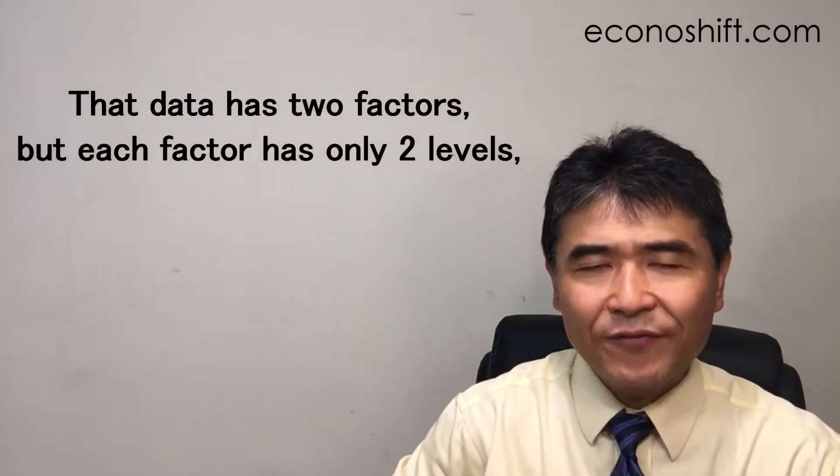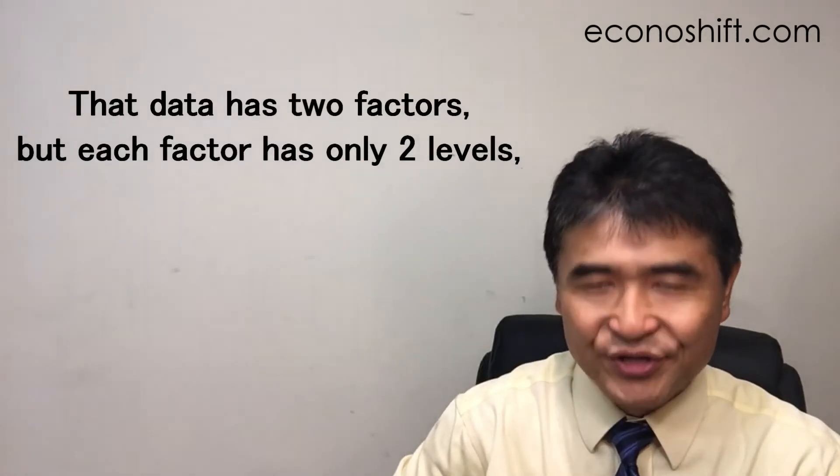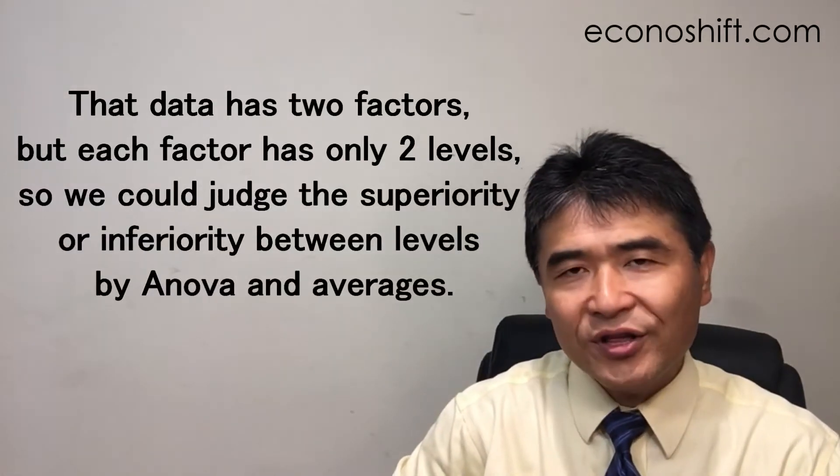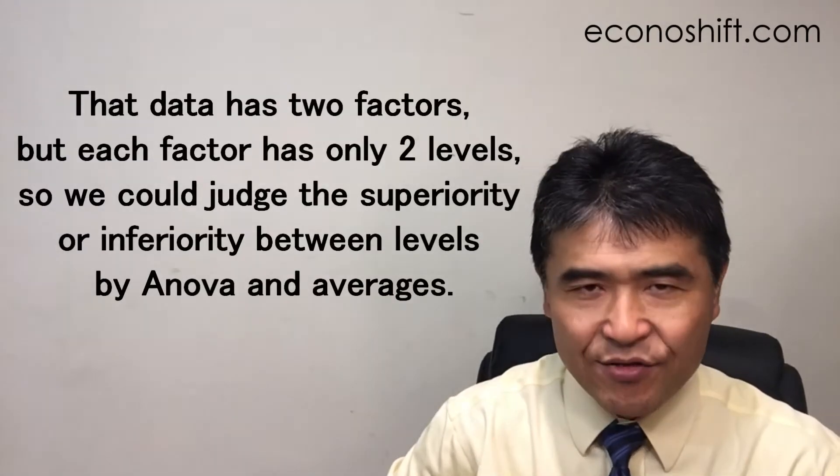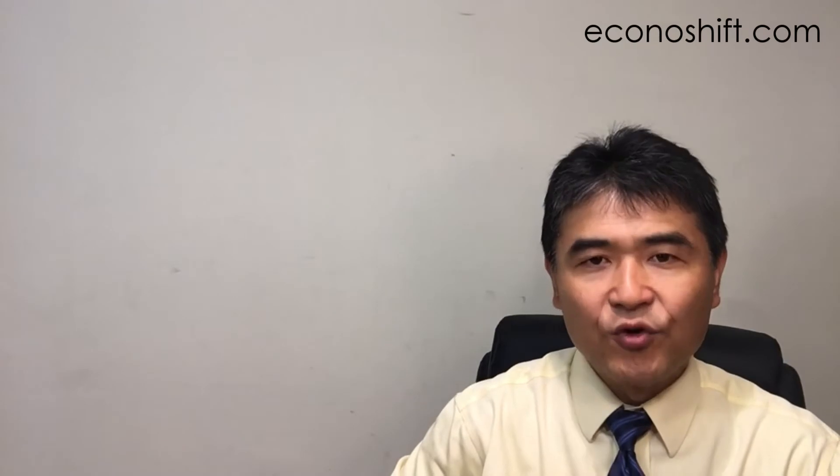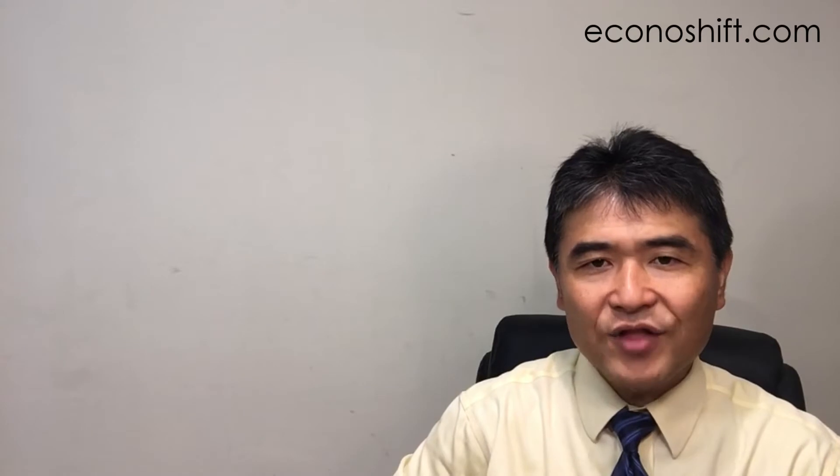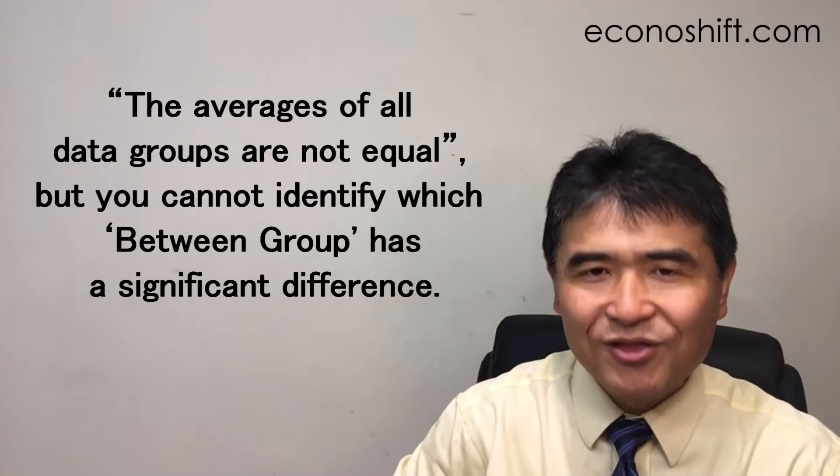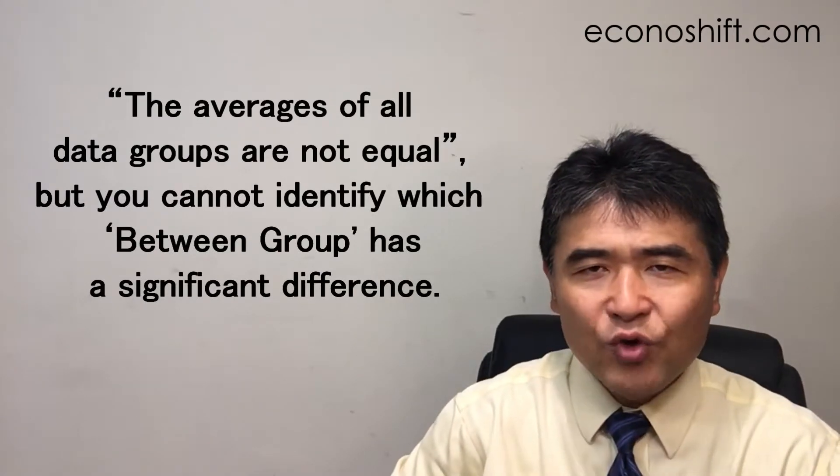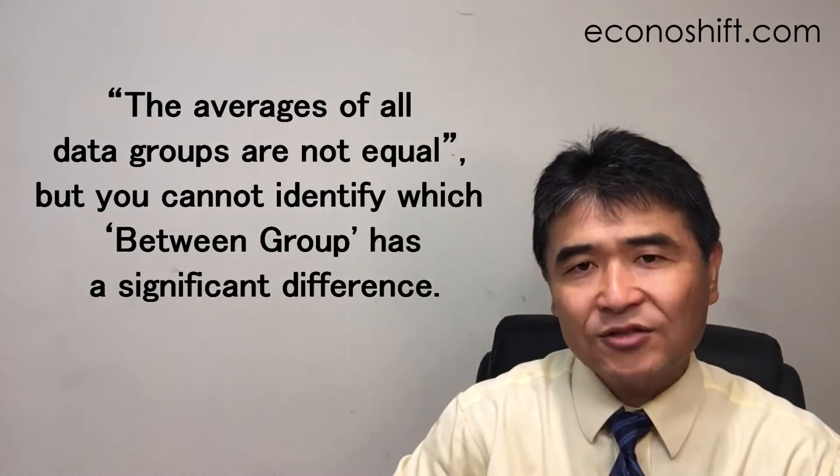In today's example, that data has two factors, but each factor has only two levels. So we could judge the superiority or inferiority between levels by ANOVA and averages. However, if there are three or more levels in one factor, and even if you could reject your null hypothesis, you can just say that the averages of all data groups are not equal. But you cannot identify which between groups has a significant difference.